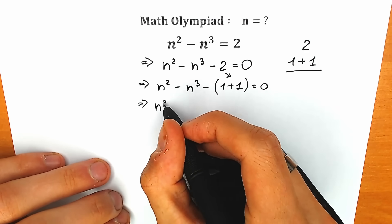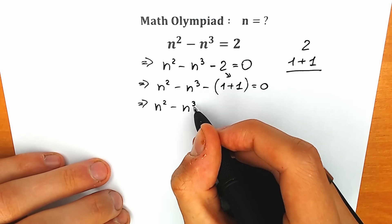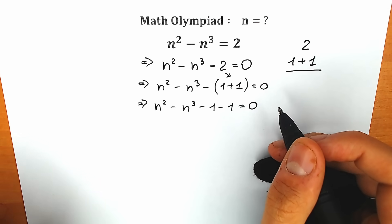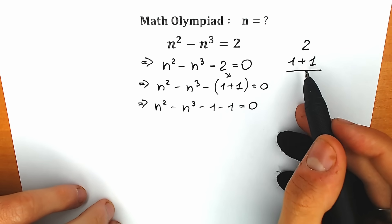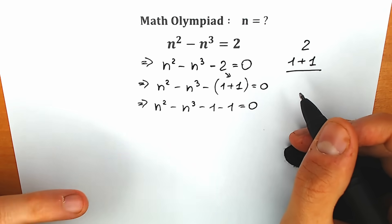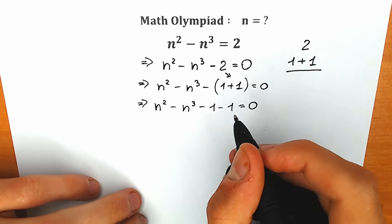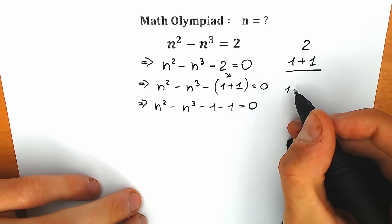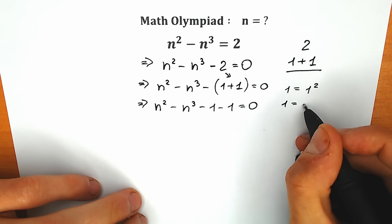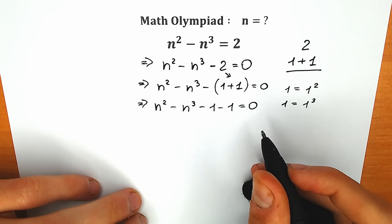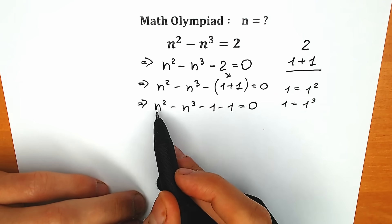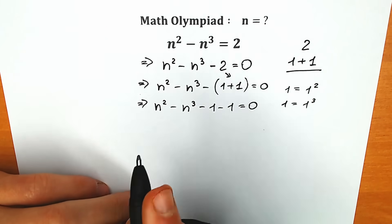As a result we have n-squared minus n-cubed minus 1 and minus 1, equal to 0. Now, my quick explanation for why we chose 1 plus 1 instead of 2: because 1 is a great constant. We can express this 1 as 1-squared, and we can express this 1 as 1-cubed. In the beginning we have n-squared and n-cubed, so somehow we can group them.